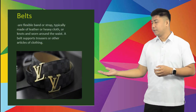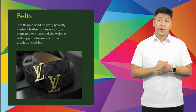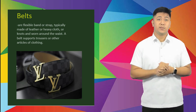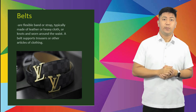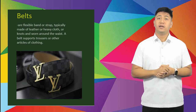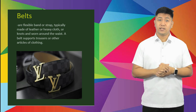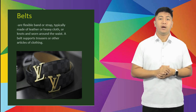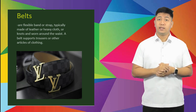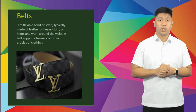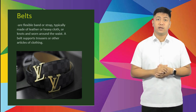Belts are flexible bands or straps, typically made of leather or heavy cloth, worn around the waist. A belt supports trousers or other articles of clothing.